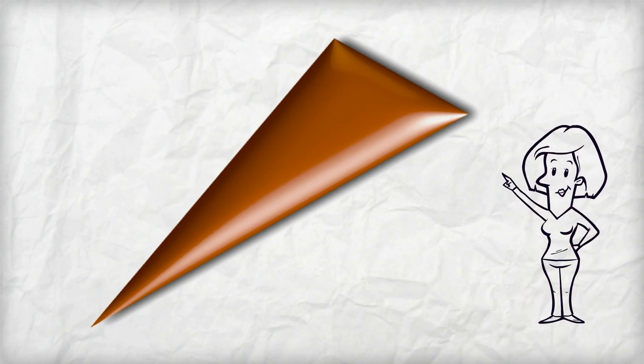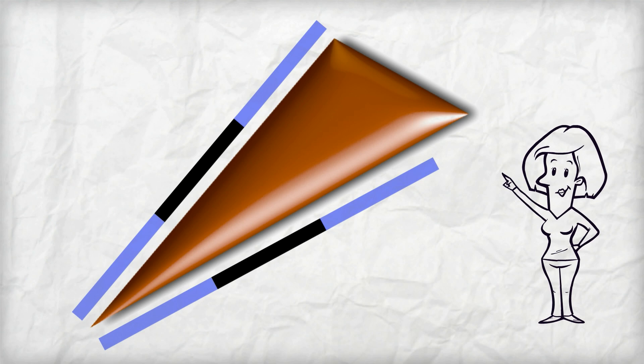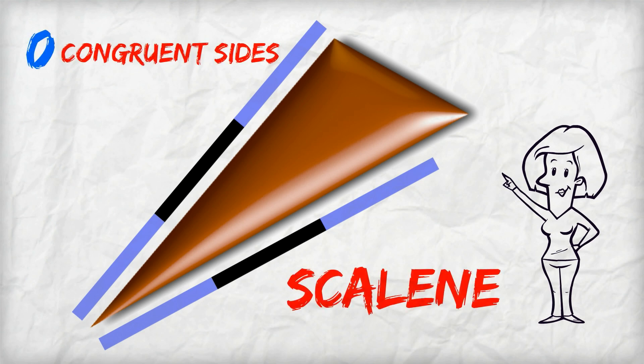Here's a triangle where all the sides are different. You can see this from my ruler. In geometry, when a triangle has no sides the same, we call it a scalene triangle.